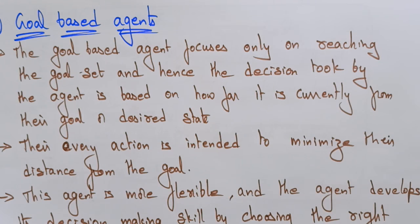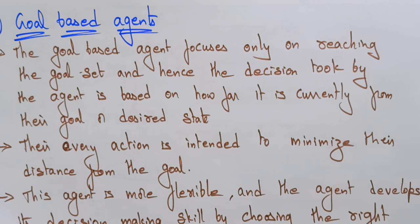Hi students, let's continue with the types of artificial intelligent agents. In the previous video I explained about the simple reflex agents and the model-based reflex agents. Now let me explain the next type of artificial intelligent agent — the goal-based agent. Based on the name, this agent works based on its goal.